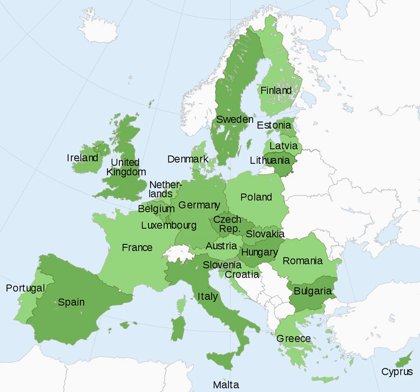Some national legal systems also explicitly accept the Court of Justice's interpretation, such as France and Italy; however, in Poland it does not override the national constitution, which it does in Germany. The exact areas where the member states have given legislative competence to the EU are as follows. Every area not mentioned remains with member states.